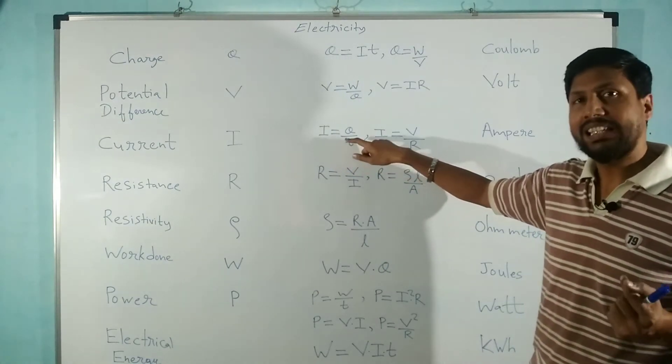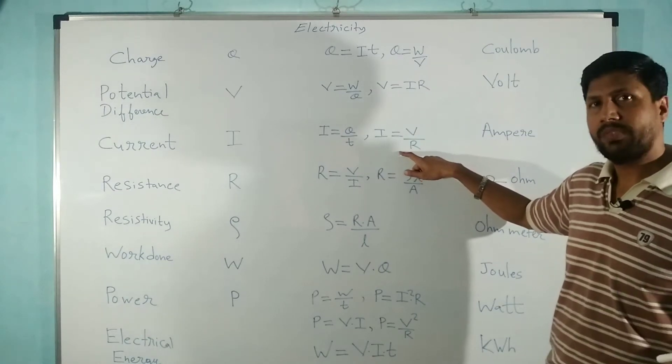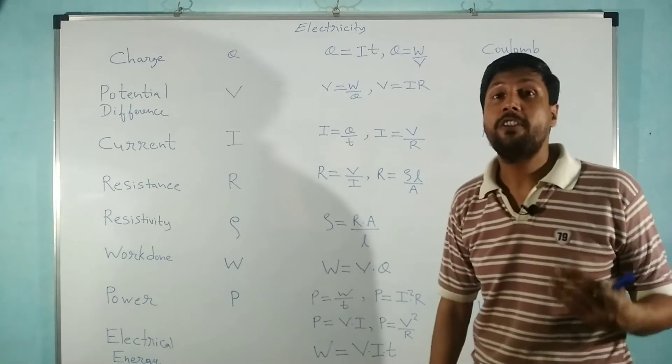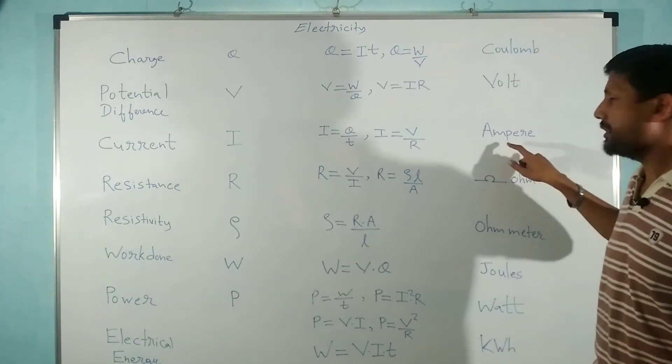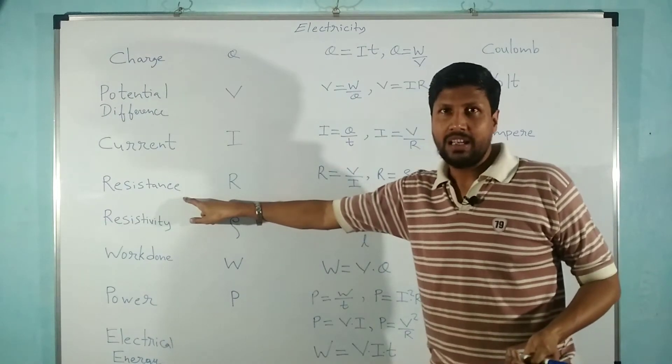This is derived from mathematical jugglery of Ohm's law. The unit of current is ampere. The next physical quantity is resistance.